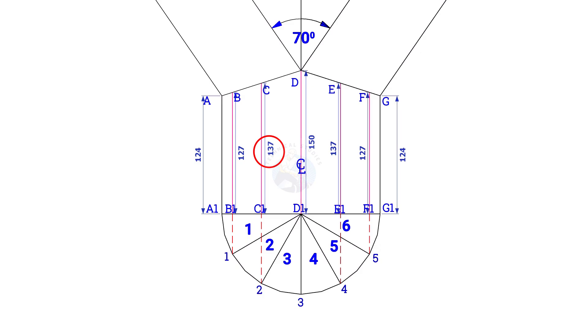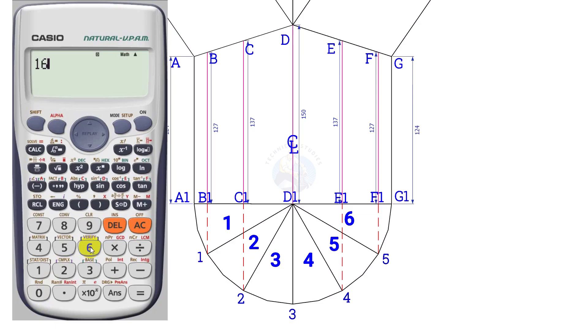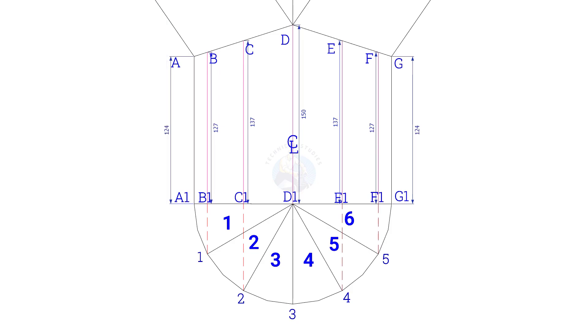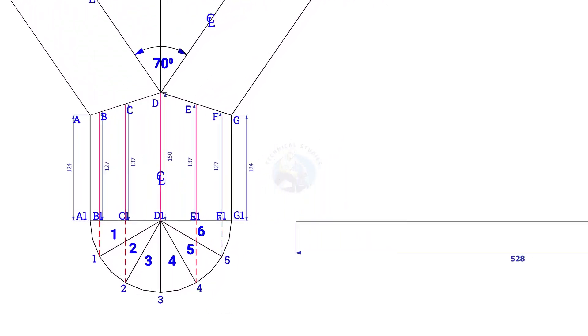Now, calculate the circumference of the pipe. Multiply the pipe diameter by 3.14 or pi. Since the diameter of the pipe is 168, multiply it with 3.14. The circumference is nearly 528mm. Draw a 528mm long line.